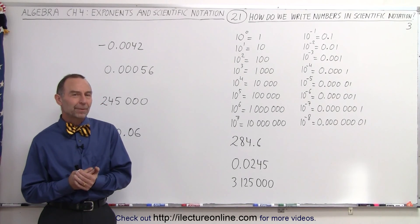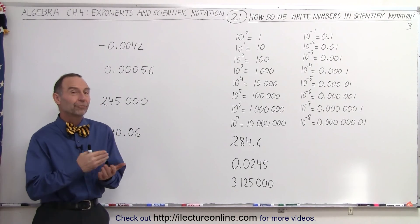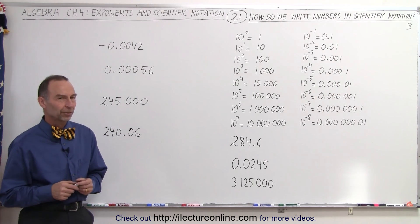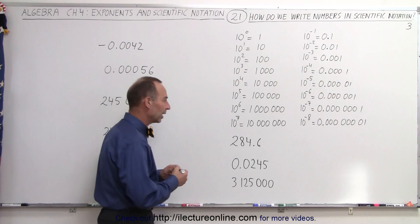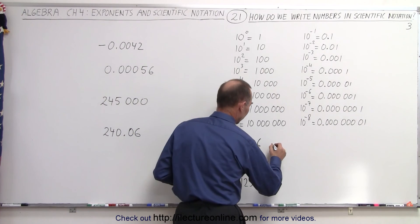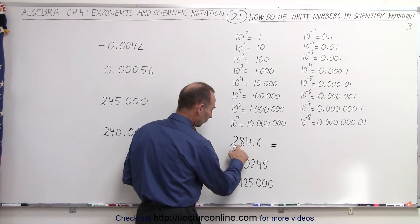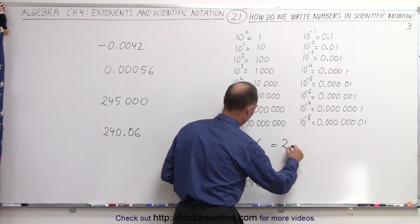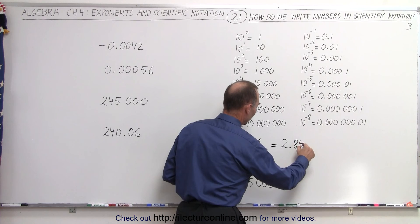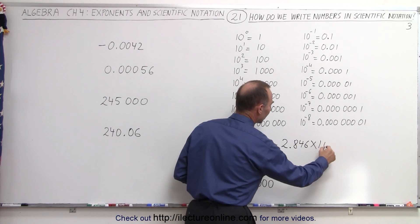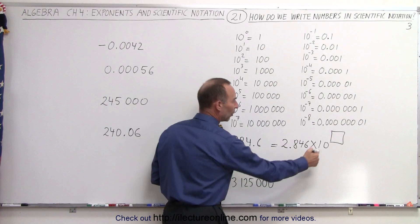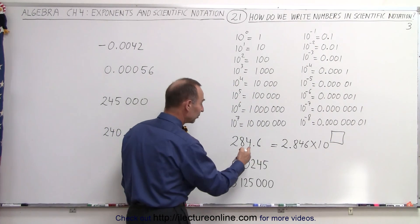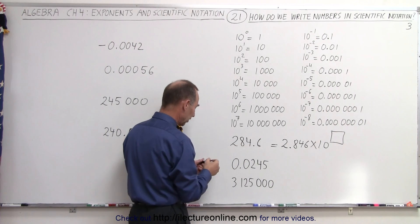Welcome to ElectronLine. Here we're going to show you how to convert numbers in decimal format to numbers in scientific notation. What you need to realize is that this is going to look something like this. You rewrite the number, but now you place the decimal right behind the first number. So this is going to be written as 2.846 times 10 to some exponent. The whole idea is: what is that exponent? And it all depends upon how many places you have to move the decimal point.